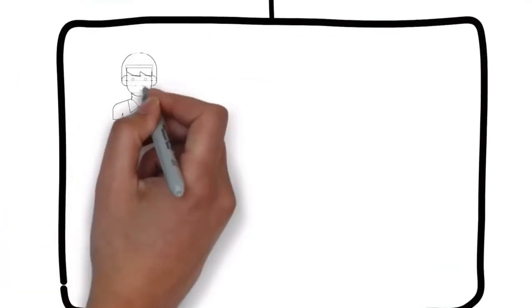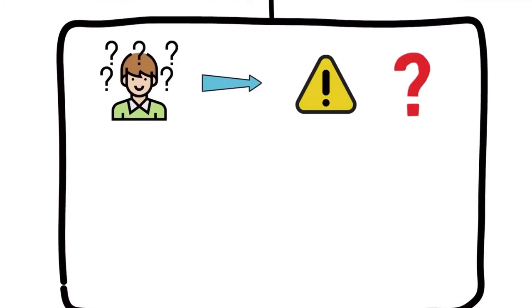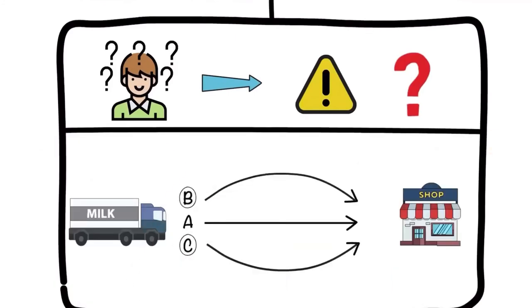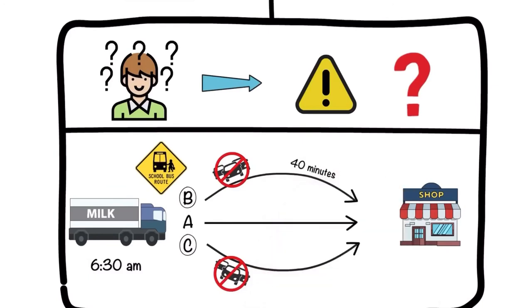In the Analyze phase, you find out why the defects exist. Since routes B and C were school bus routes, by reducing the starting time by one hour to 6:30 instead of 7:30 meant avoiding the traffic. Routes B and C now take 40 to 45 minutes to reach the supermarket.